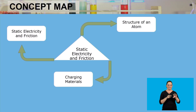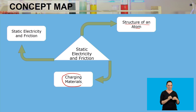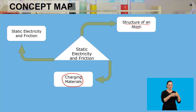We said we were going to look at the main idea being static electricity and friction. Within that, we started by looking at the structure of an atom. We further went on to look at how we're charging materials that are neutrally charged, and lastly we looked at static electricity and friction.